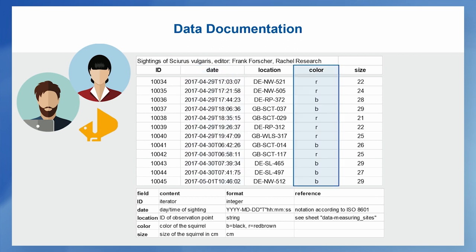The next point is that Louise was interested in distinguishing the number of red-brown versus black squirrels. Unfortunately, Rachel and Frank chose different ways to represent that. This is really something where you should impose a controlled vocabulary. If you have a standard agreed upon in your community, use it. If not, simply ask your team to follow one approach — for example, B for black and R for red-brown, not B for brown, which leads to misunderstandings.